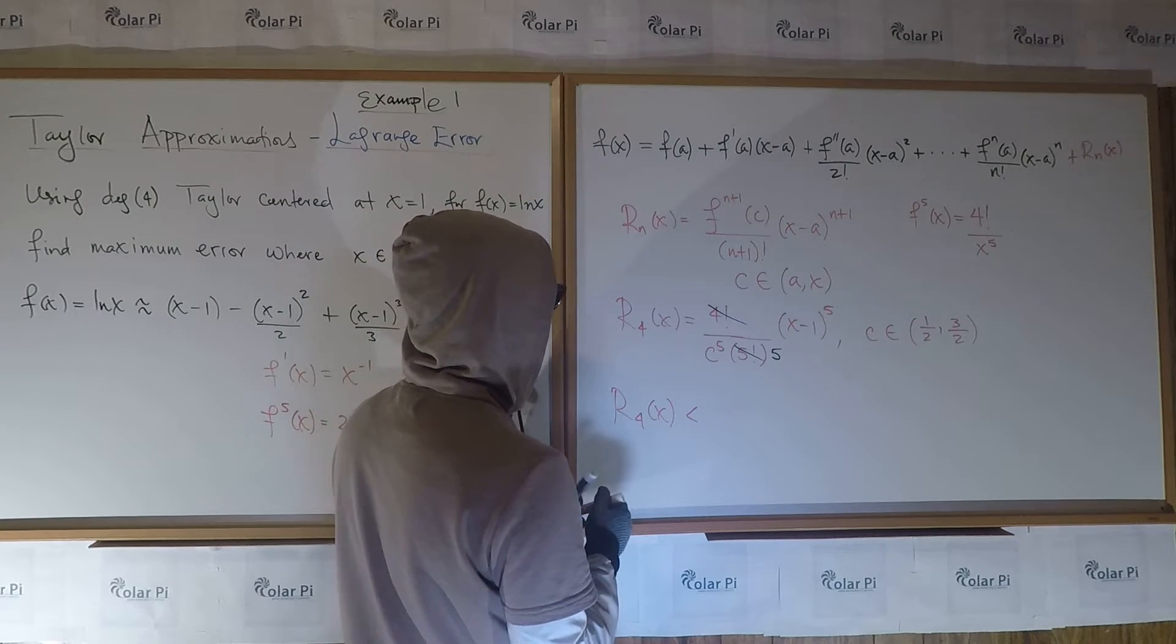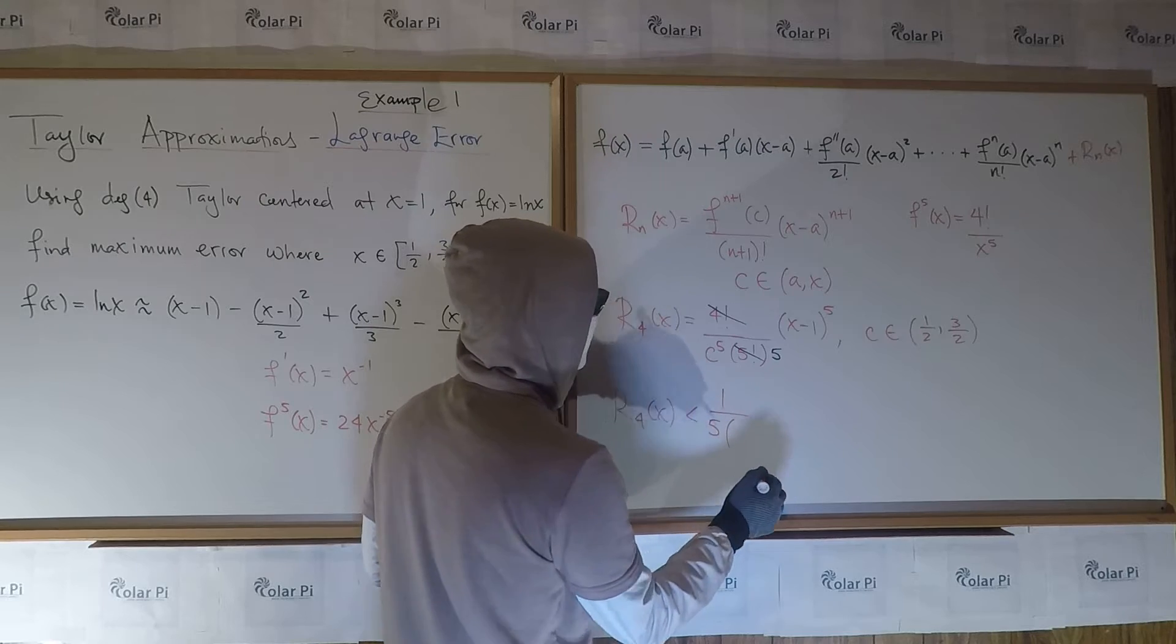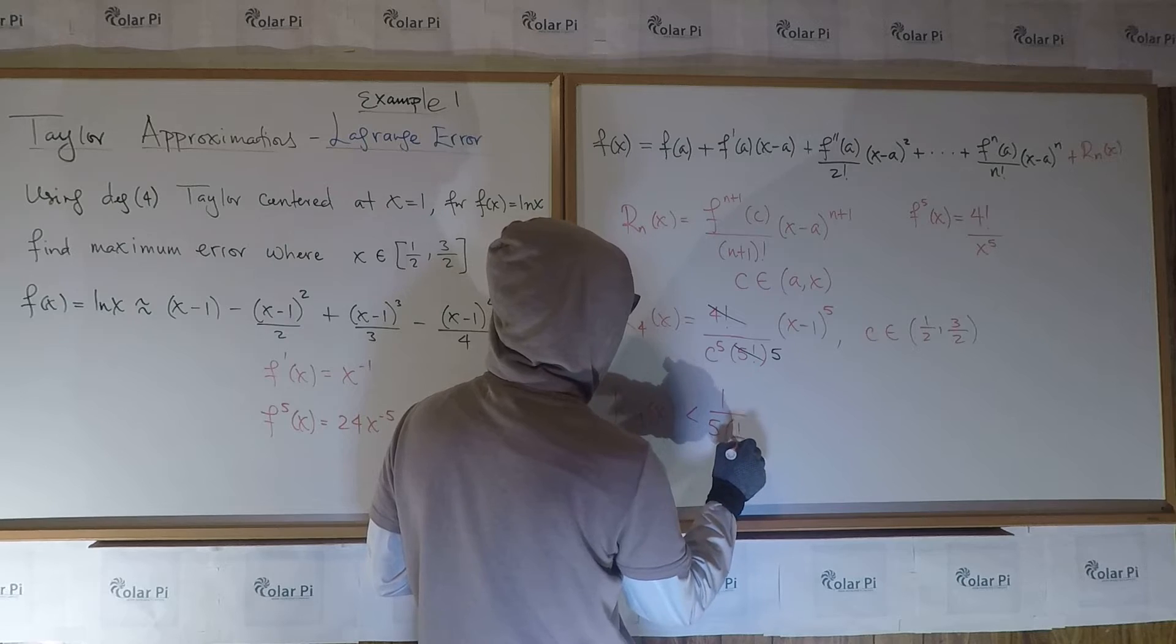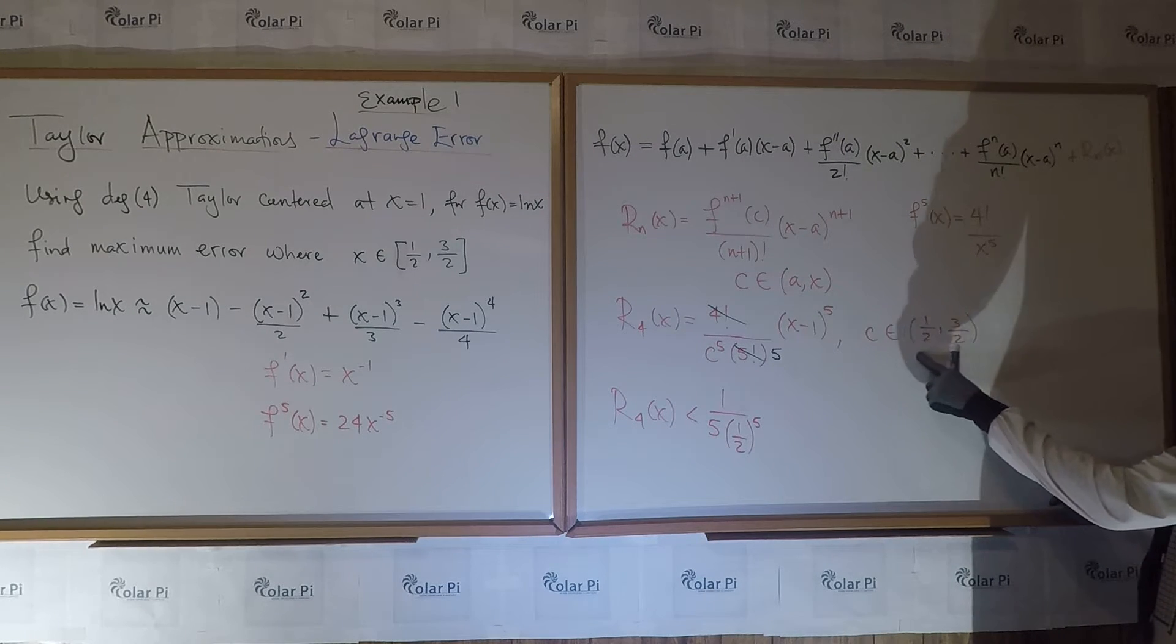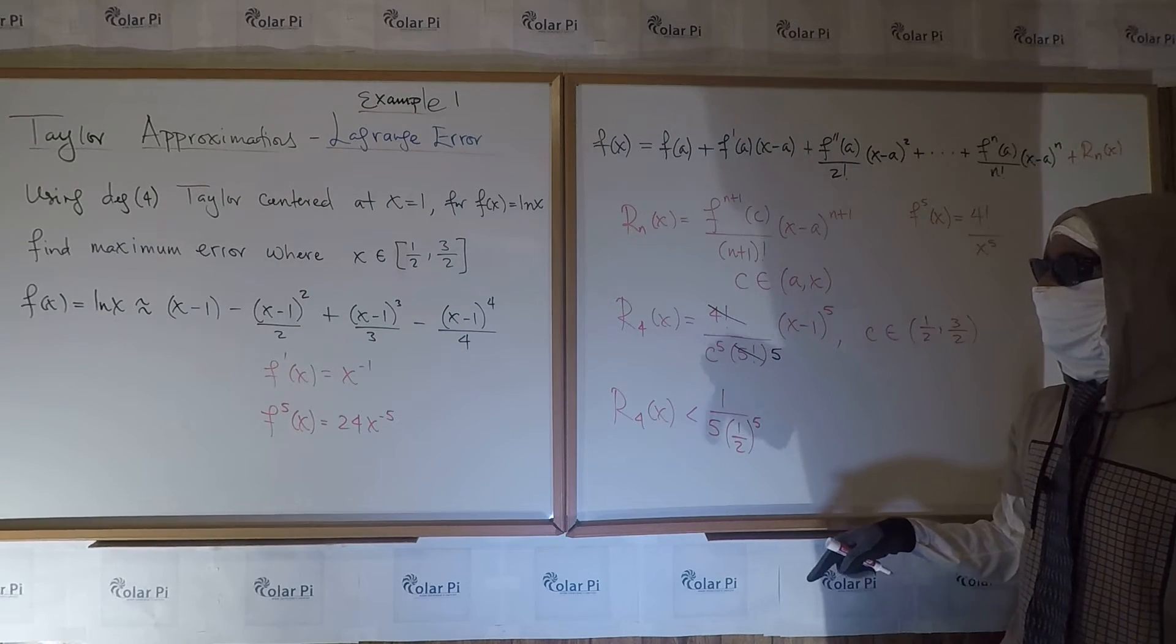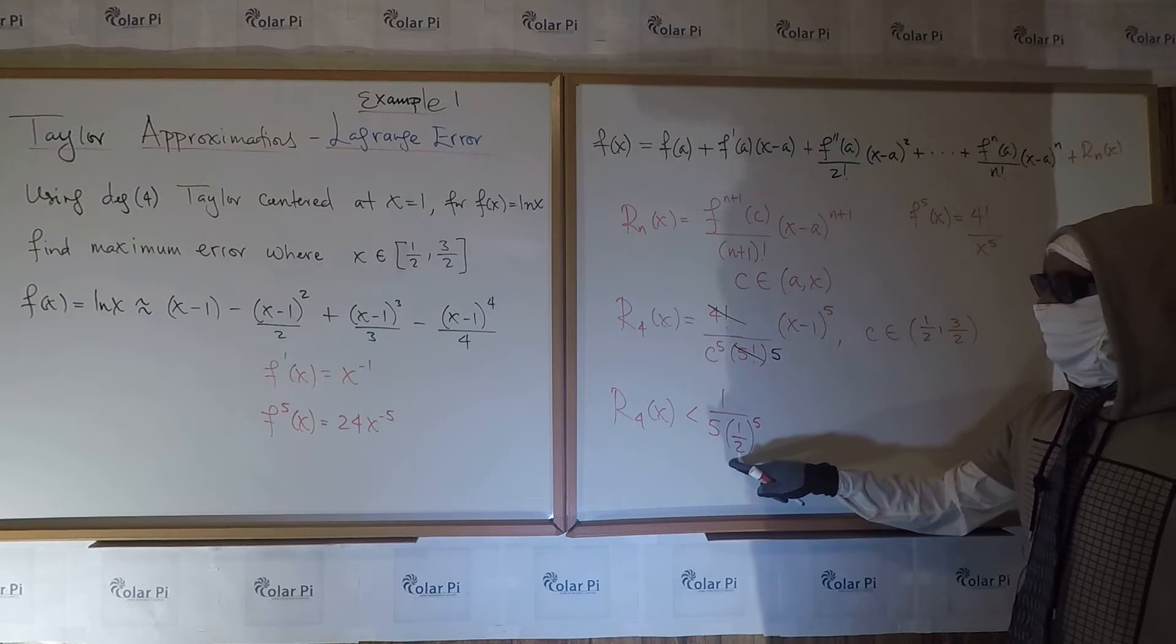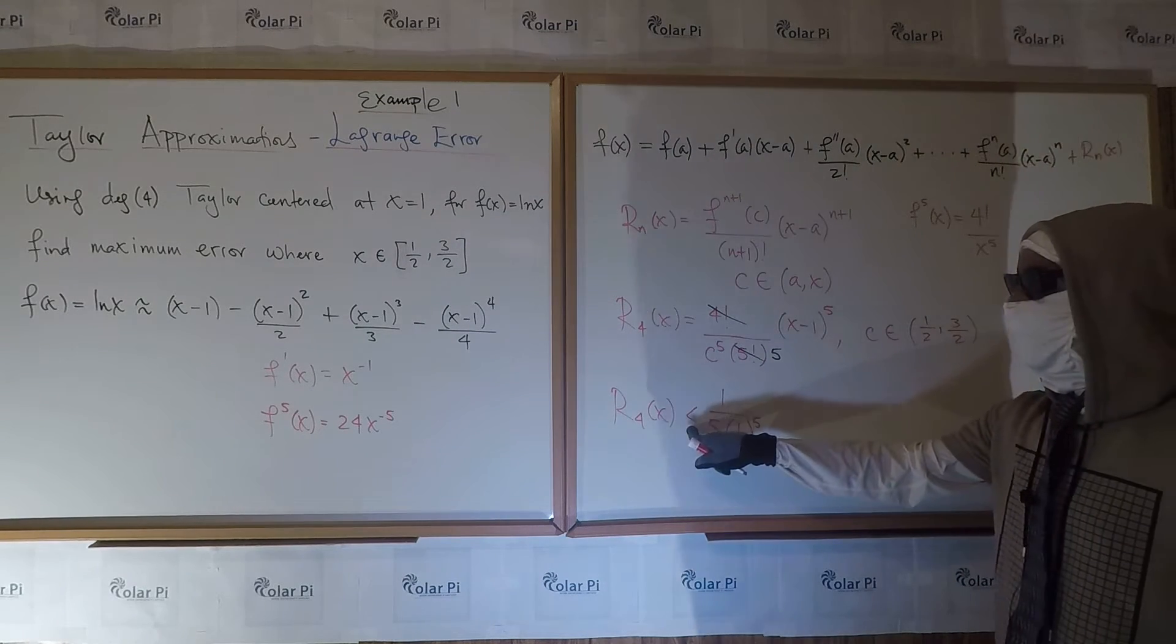But yeah, I'm going to say r4 of x is strictly less than one over five, and this five is that black five right there. And then I'm going to pick c to be the greatest lower bound of this, and that's why I have strictly less than. And the greatest lower bound of this is one-half. So I have one-half c to the fifth. And the reason why I picked the greatest lower bound instead of the least upper bound of the set is because since I have c to the fifth in the denominator, this part is going to be biggest if I pick the smallest possible c. And c is in the open interval, so this is the greatest lower bound of this set, and that's why again I use strictly less than.